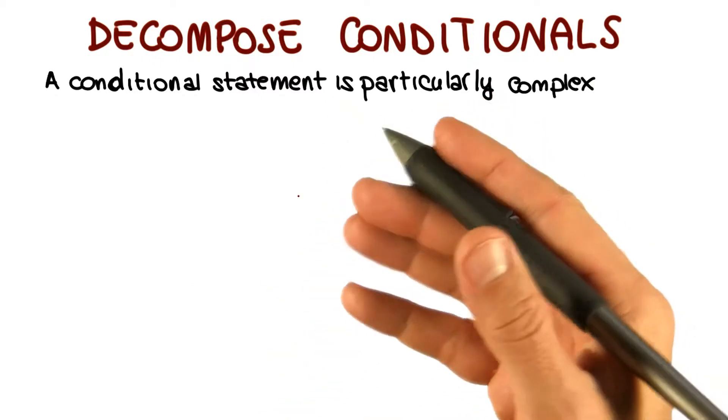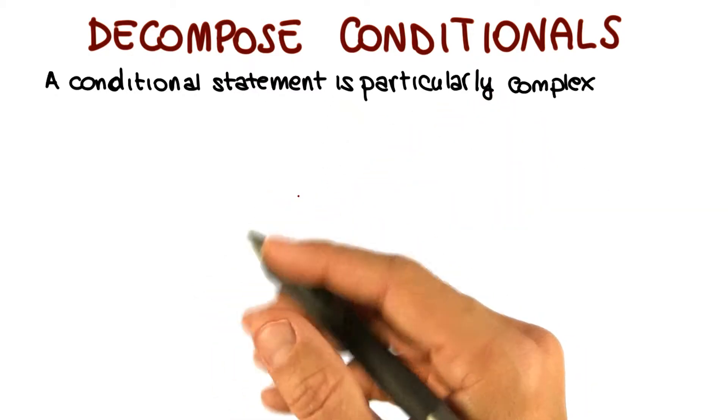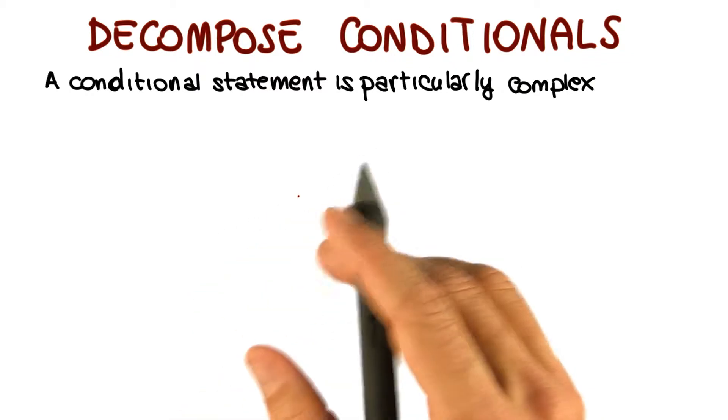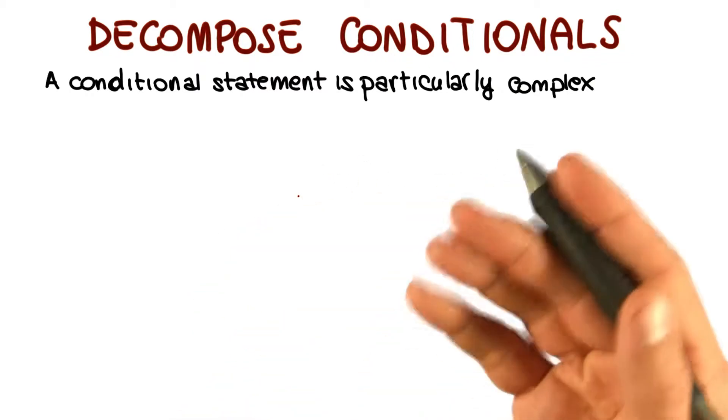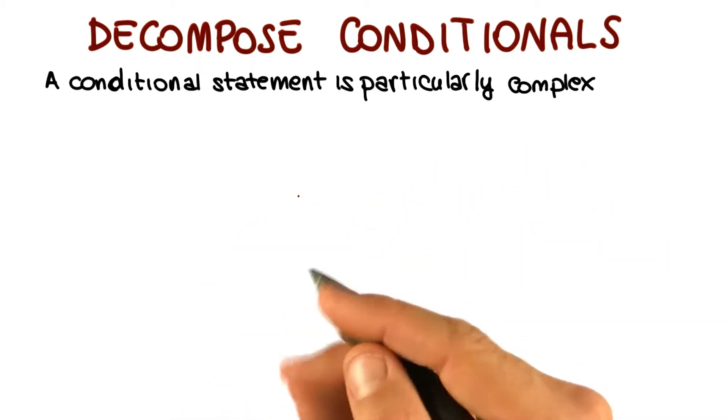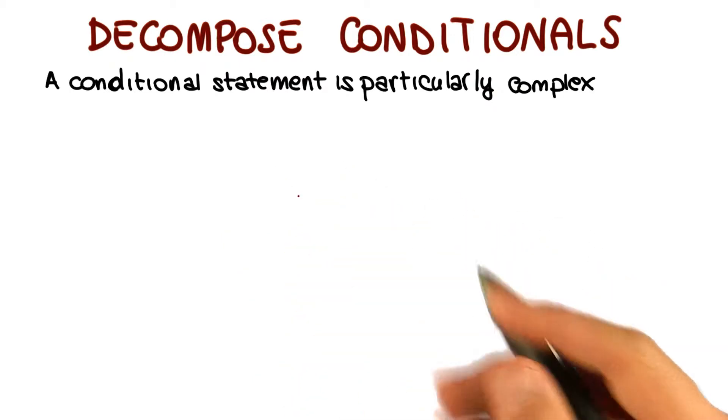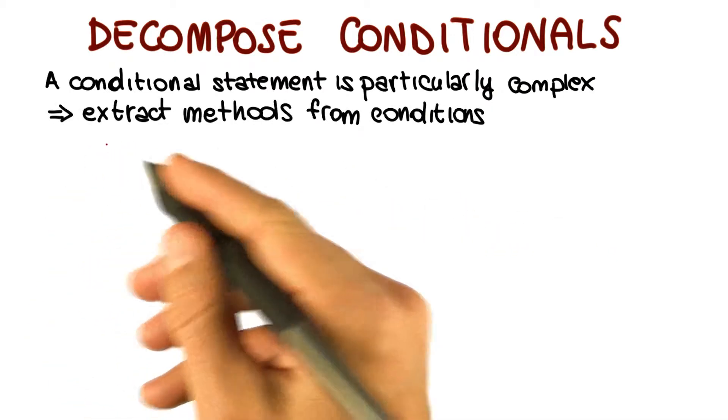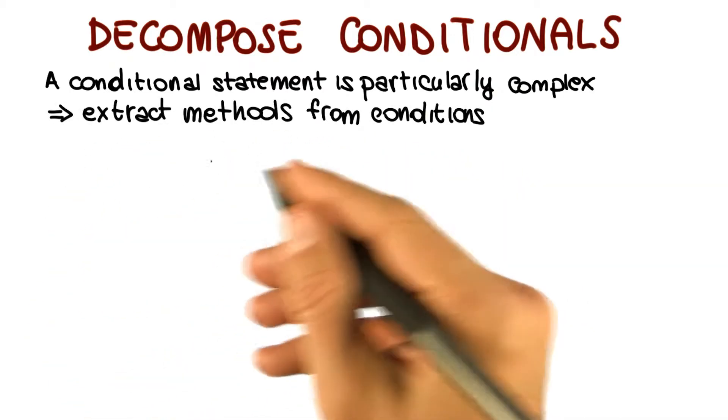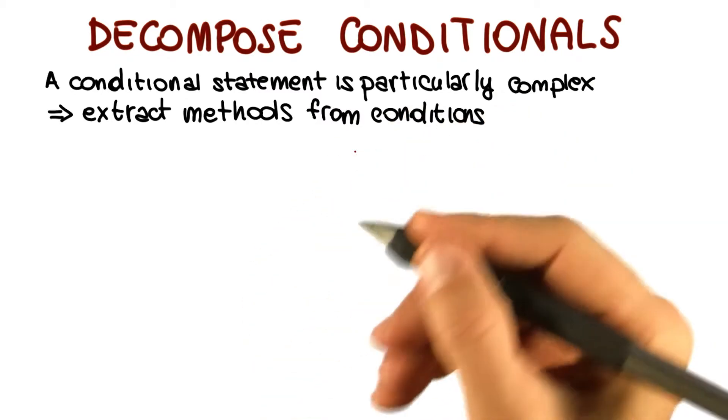And similar to what we discussed for the previous refactoring, the conditional, if it's too complex, might tell you what happens but obscure why it happens. To address this issue, you can do a similar thing to what we did in the previous refactoring. You can transform the condition into a method and then replace the condition with a call to that method.